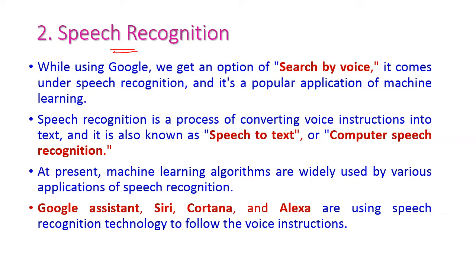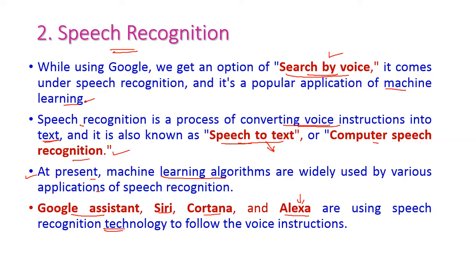The second application is speech recognition, which is a very popular application nowadays. Google uses the option 'search by voice' — we can give commands using our voice, and the machine recognizes and converts that voice into a command. It is a process of converting voice instructions into text, known as speech-to-text conversion or computer speech recognition. Machine learning algorithms are widely used in various speech recognition applications such as Google Assistant, Siri, Cortana, and Amazon Alexa, which use speech recognition technology to follow voice instructions.